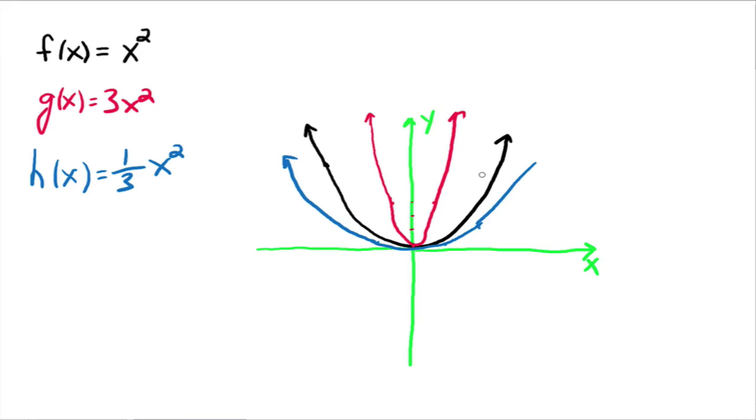So forth and so on. Everybody see that? Okay, this is called a vertical shrink. So we're going to generalize this up here in just a second. Make note of what we're doing here.